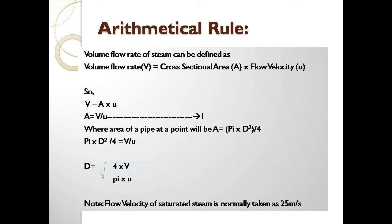Substituting the area expression into the equation gives: πD²/4 = V/U. Rearranging, D equals the square root of (4V divided by πU). Note that the flow velocity of saturated steam is normally taken as 25 meters per second.